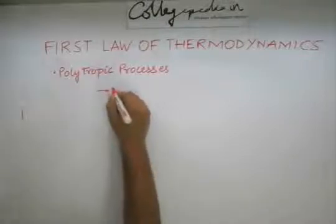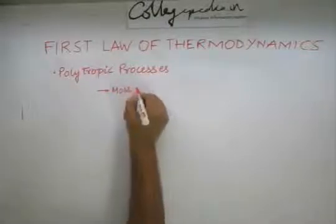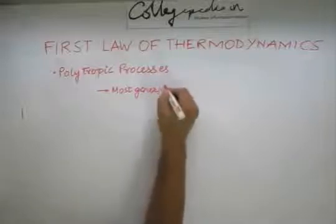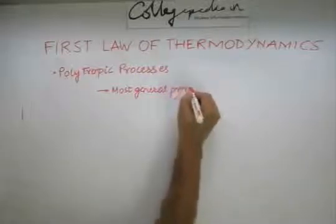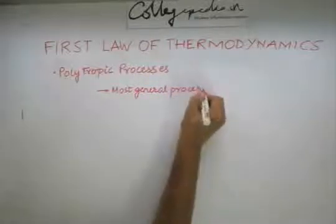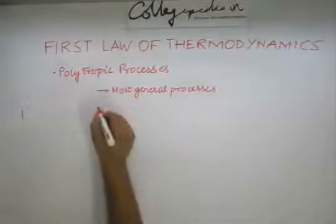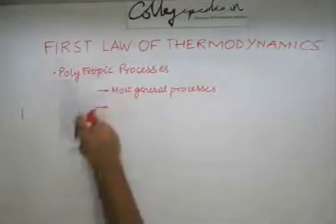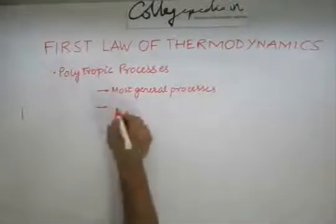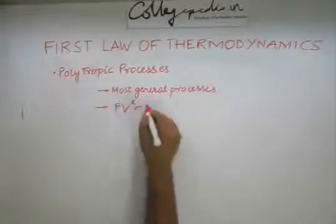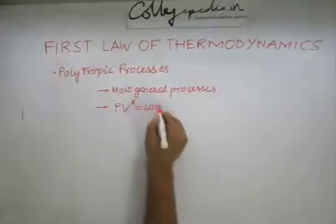Polytropic processes are the most general processes. In a polytropic process, just like the adiabatic process, we have something similar to it: pv to the power k equals a constant.